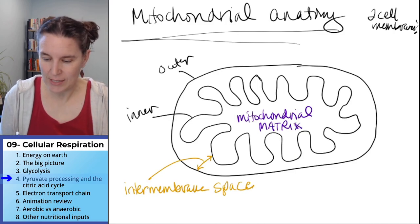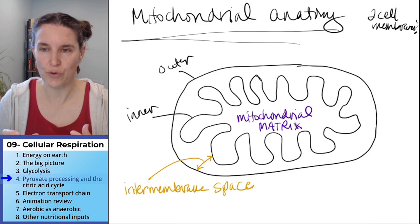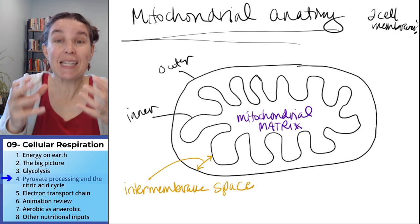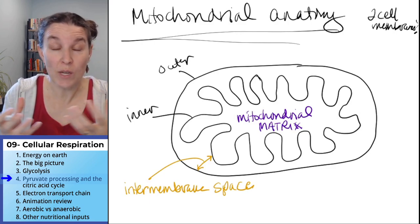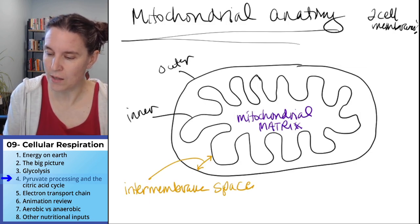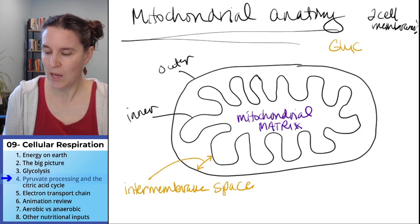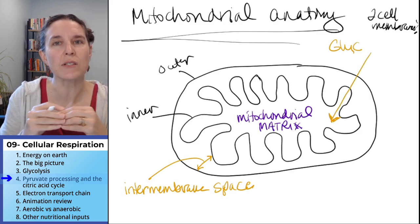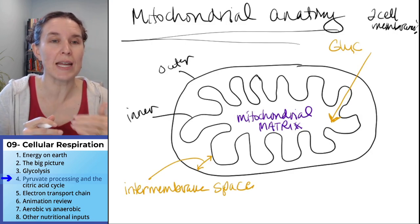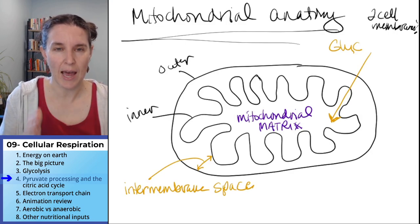So if you imagine this mitochondrion that I just drew for you sitting inside a cell, a eukaryotic cell, glycolysis is happening out here. And pyruvate travels into the matrix of the mitochondria where the next two steps happen.